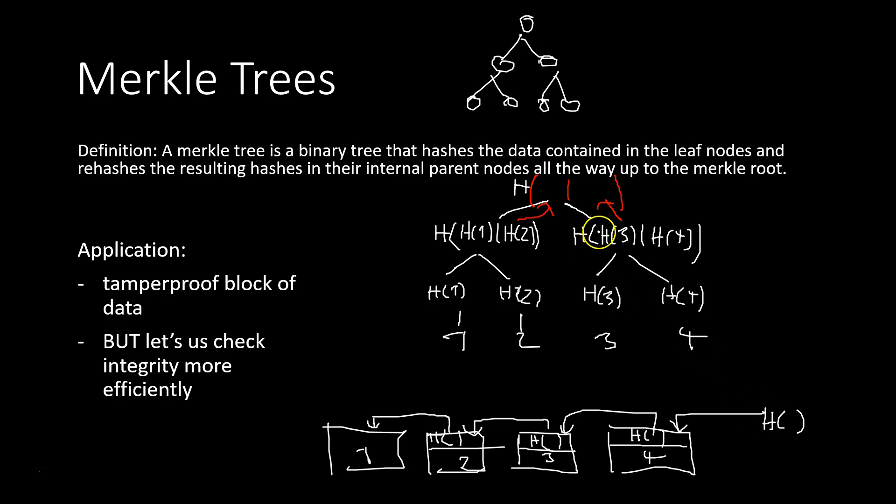Here if you have the tree structure given, you only need to download here the hash of two, and the hash of the hash of three, and the hash of four. Then you're able to recreate here this hash right here, and then you simply have to merge these two, and then you're able to verify if this structure is actually correct, and if one is actually in here.